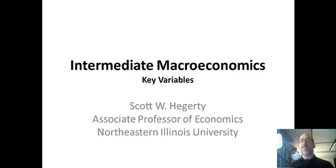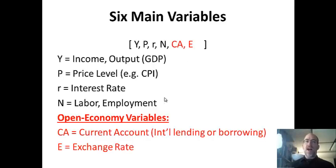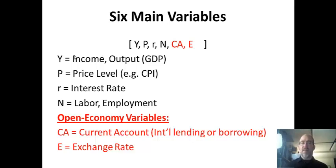I'm going to start off talking about the key variables in intermediate macroeconomics. This goes back to some older Keynesian stuff — there are papers from the 50s that lay this out. We can talk about how these are determined in the closed and the open economy. The big four variables I name are Y, P, R, and N.